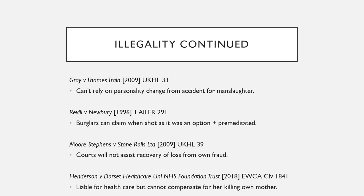Revill v Newbury is different — here burglars were allowed to claim where they had been harmed. They went onto the defendant's property to burgle, but the defendant came out with a gun and shot them in the back while they were leaving and running away. They were able to claim because the shot was optional and premeditated. The defence of illegality could not be raised, as they were shot while leaving, not while committing the theft.